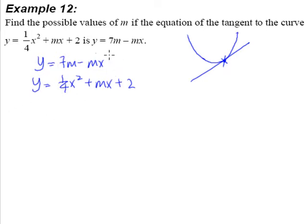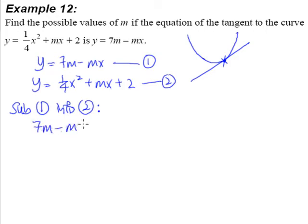So what we do is we try to solve the simultaneous equation. We will try to do substitution. We substitute in equation one. We shall call this equation one and we'll call this equation two. We do substitution method. We substitute equation one into equation two. And this is what we end up with: 7m minus mx is equal to 1 quarter x square plus mx plus 2.